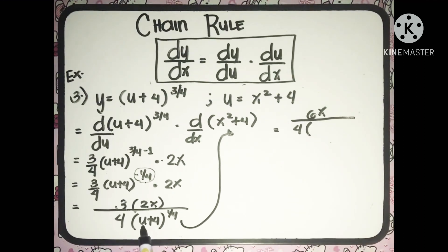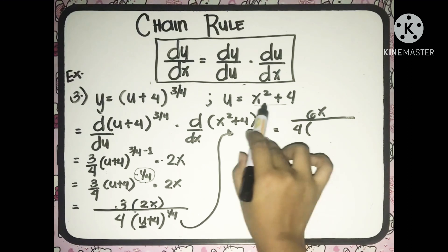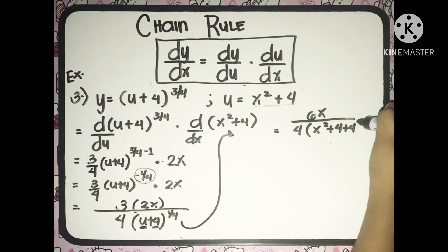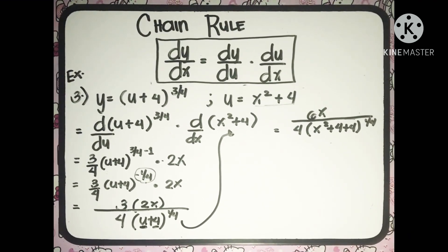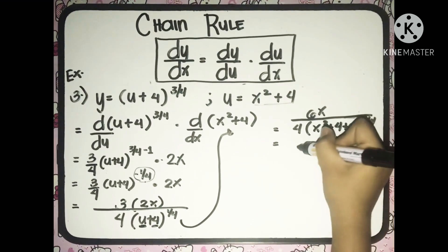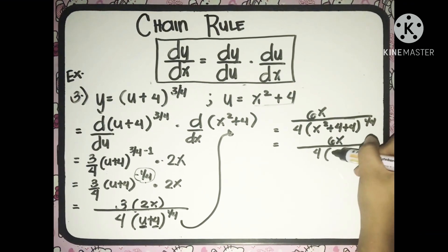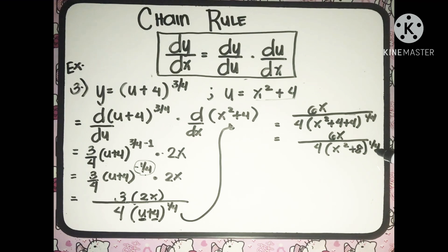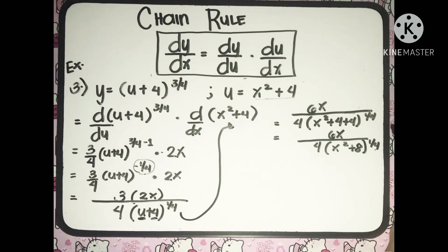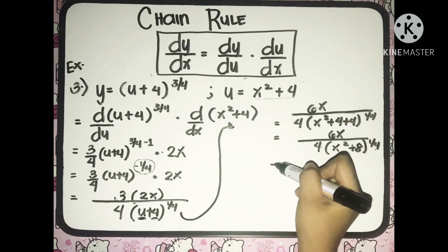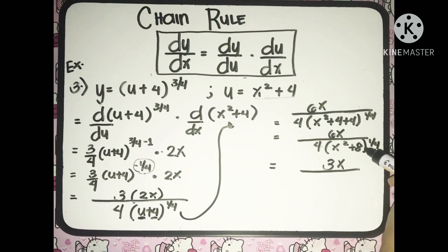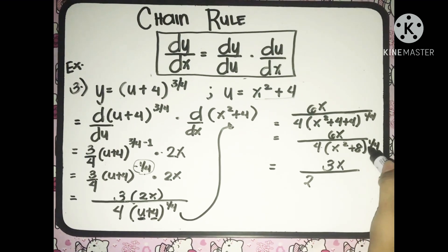Let us substitute the value of u which is x squared plus 4, and we still have plus 4 here, so we write plus 4, raised to 1 fourth. Combining like terms, we'll have 6x over 4 multiplied to x squared plus 8 raised to 1 fourth. Since 6 over 4 simplifies to 3 halves, we'll have 3x over 2. And if we transform x squared plus 8 raised to 1 fourth into radical form, we'll have the fourth root of x squared plus 8.